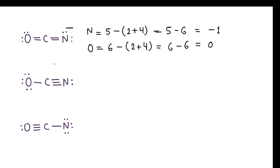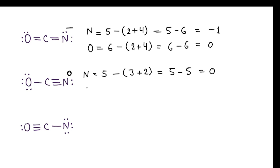Now calculate formal charge for the second resonance structure. For nitrogen: 5 valence electrons minus (number of bonds: 3) plus (non-bonded electrons: 2) equals 5 minus 5 equals 0. So 0 charge on this nitrogen atom. For oxygen: 6 minus (number of bonds: 1) plus (non-bonded electrons: 6) equals 6 minus 7 equals minus 1. So minus 1 charge on this oxygen atom.